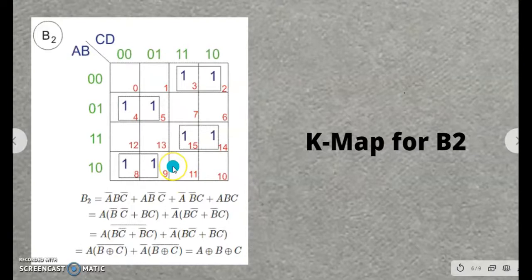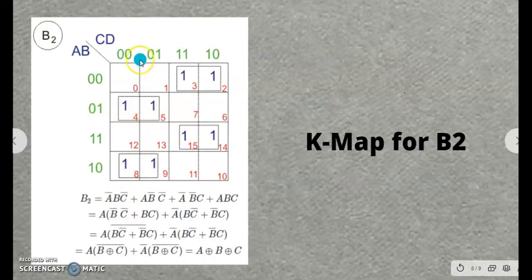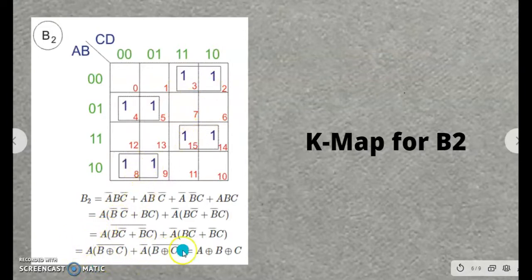Moving to the KMAP for B2, all the values in the equation are placed as logic 1. We pair two adjacent ones to form pairs, and we find there are four pairs in this KMAP. For one pair, going vertically, C-bar is common, giving A-bar·B·C-bar as the output. When you simplify all four pairs, you get the equation A XOR B XOR C.